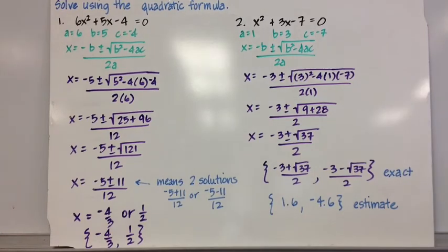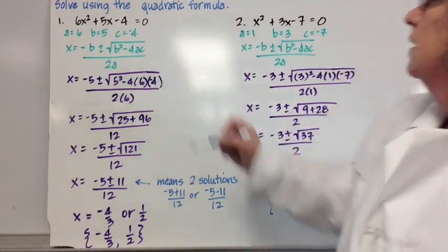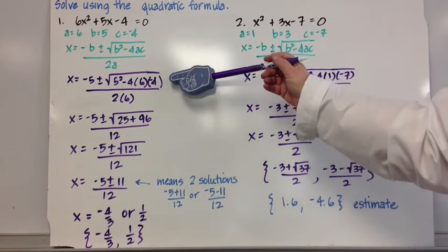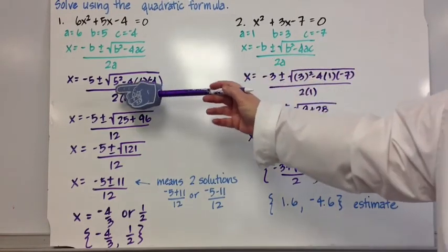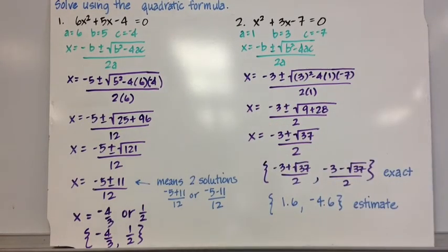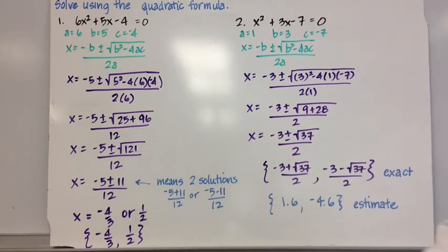And maybe I'll put that in parentheses just to make that clearer, so you don't think that that's minus 4 or subtract 4. It's actually times negative 4. So we're just going to simplify from this point out. The radicand becomes 25 plus 96, or 121, and the other terms remain the same. So that's negative 5 plus or minus the square root of 121 over 12.